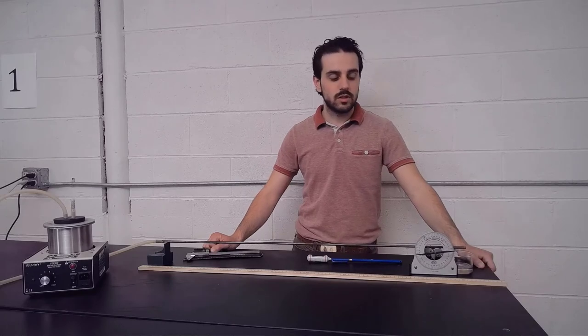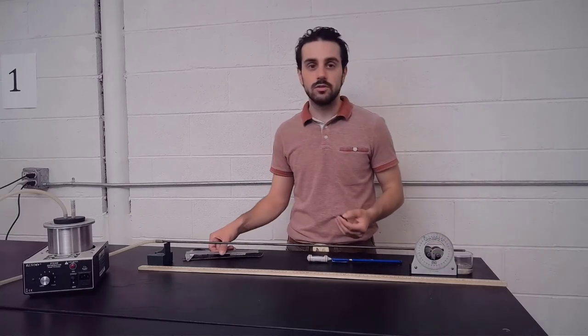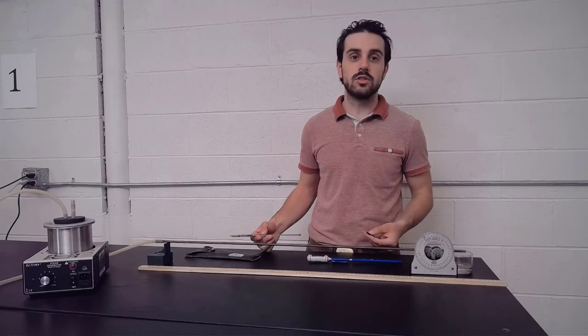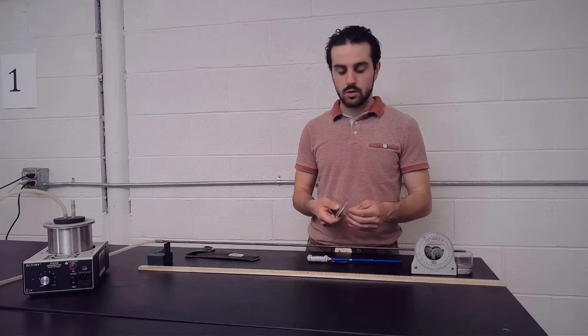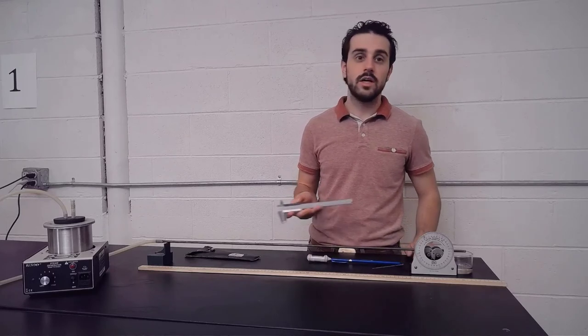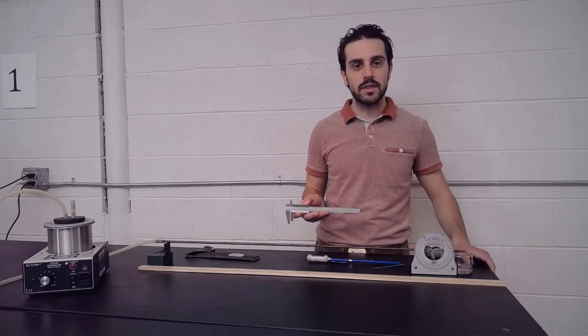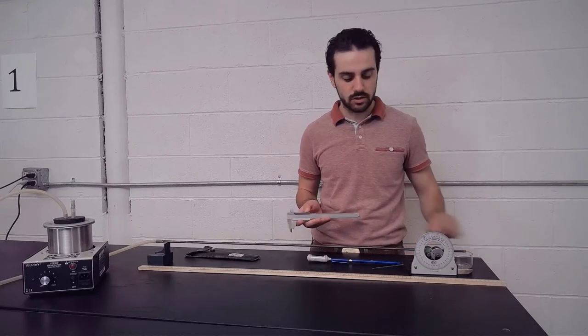The first step of this lab will be to find the radius of our axle that our protractor uses. We'll place it in the calipers, remove them, and read the diameter off the calipers. When we divide that by two, we'll have the radius of our axle.